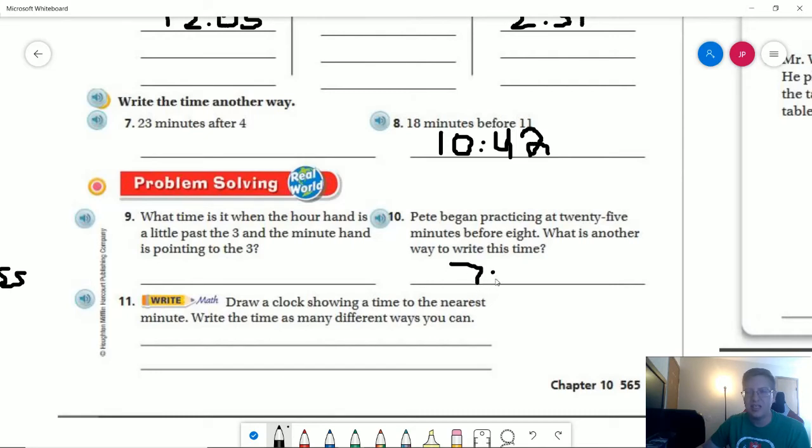So Pete practices at 25 minutes before eight. That means it's currently seven something. And if I do 60 minus 25, that is going to give me 35. So it would currently be 7:35.